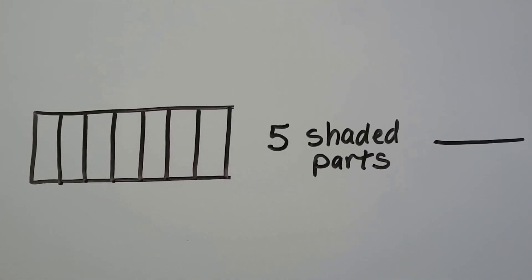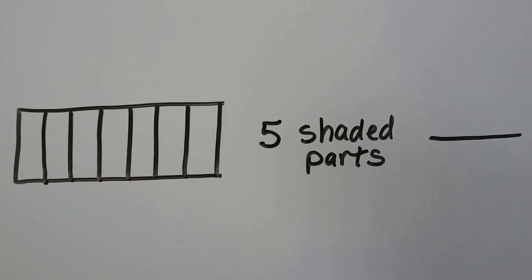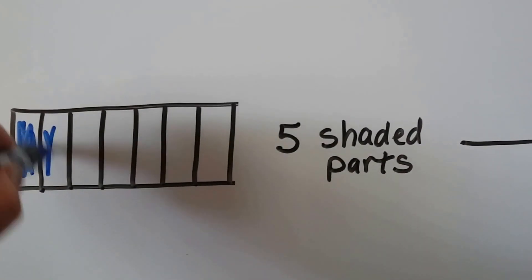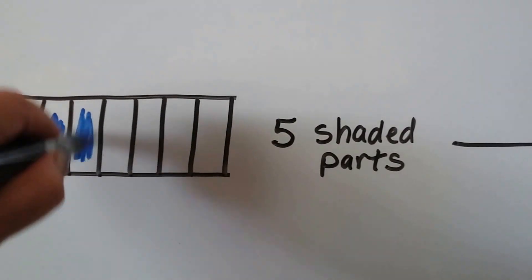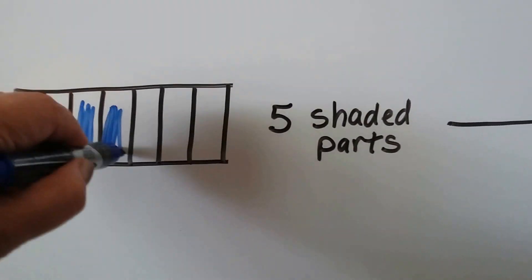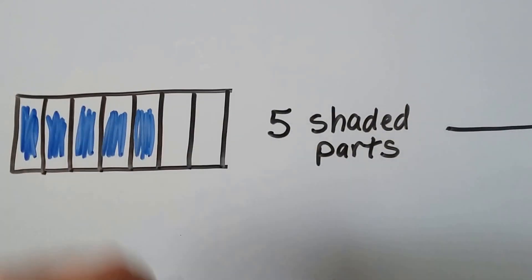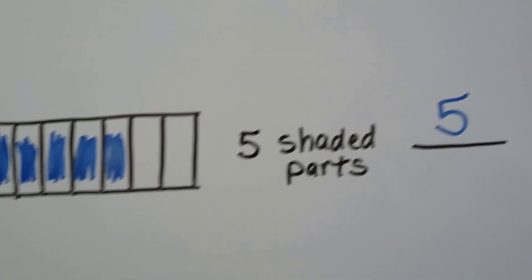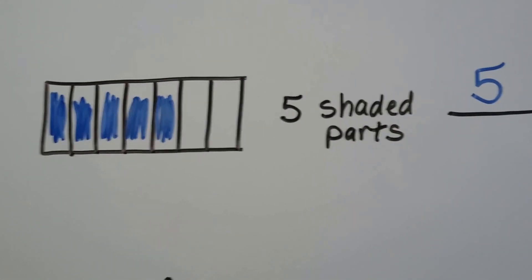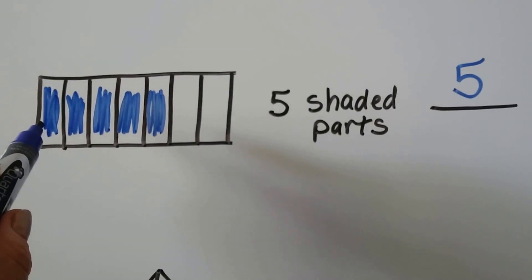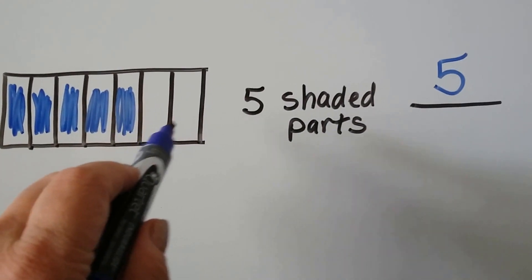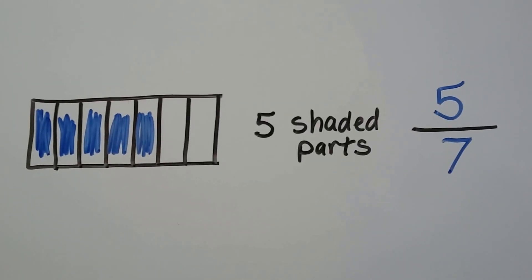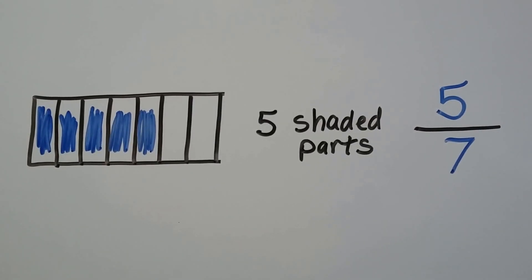There's supposed to be five shaded parts, so let's shade five parts: one, two, three, four, five. There's five shaded parts — that's going to be up here, that's our numerator. And how many equal parts are there? We know there's five here, six, seven. Five-sevenths of this rectangle is shaded.